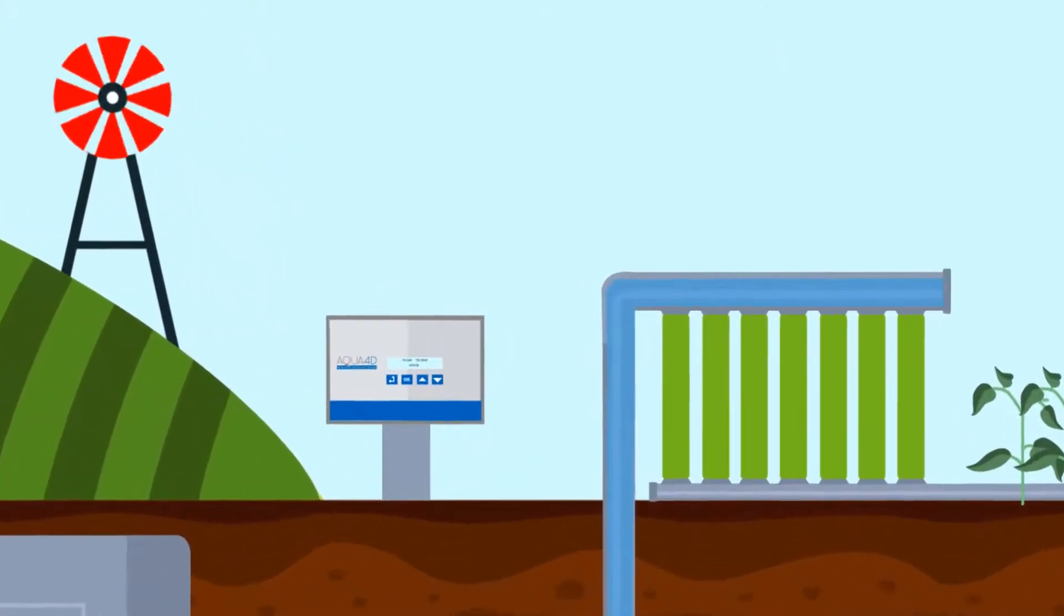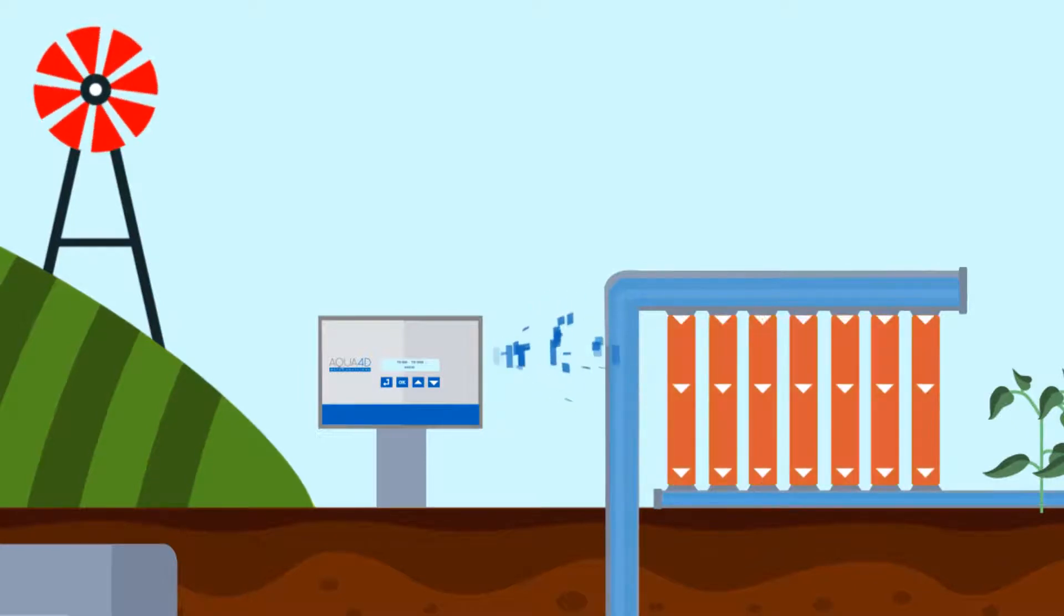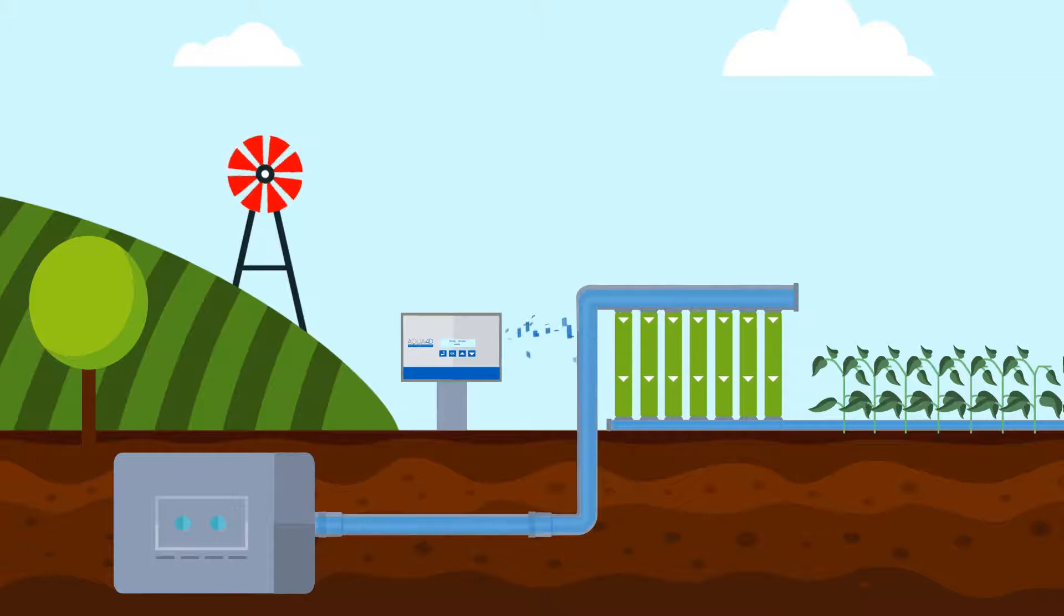The system is composed of the Command F Pro, the brain of the system that controls it and generates treatment signals and treatment units that diffuse those signals in the water.